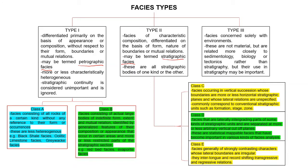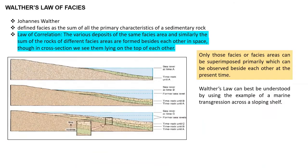Class C facies intertwine and record shifting transgressive and regressive relationships. In Class D and E there is a change in grade or sedimentary grain type. Class E represents inter-tonguing relationships where there is a gradual change from one rock type to another. Type three facies is associated exclusively with the environment of deposition — these are not material but are more closely related to biology, sedimentology, or tectonics. In type three, we are specifically focused on the type of environment, and environmental analysis is of great importance in stratigraphy.